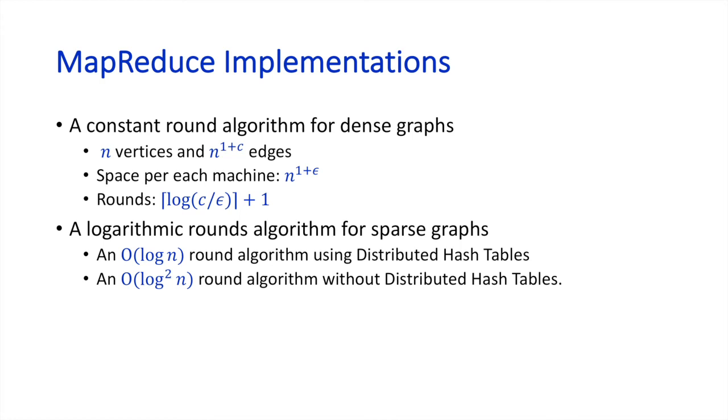In this paper, we mainly focus on large datasets and give two MapReduce algorithms for Affinity. The first one works for dense graphs and takes only constant rounds. The second algorithm works for sparse graphs and takes logarithmic rounds.